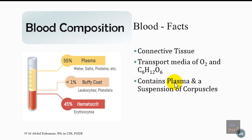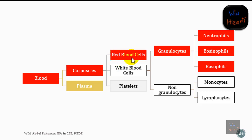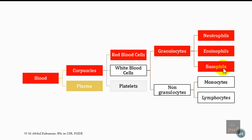Blood comprises corpuscles and plasma. The corpuscles can be divided into red blood cells (RBC) and white blood cells (WBC). White blood cells are further divided into two groups: granulocytes and non-granulocytes. Granulocytes include three main types — neutrophils, eosinophils, and basophils. Non-granulocytes include monocytes and lymphocytes. This is the rough composition of the blood.